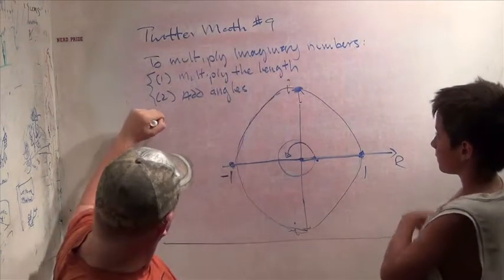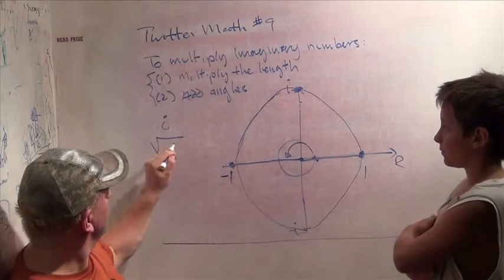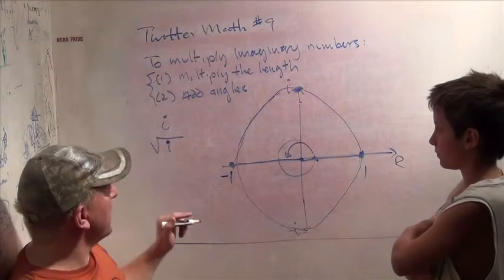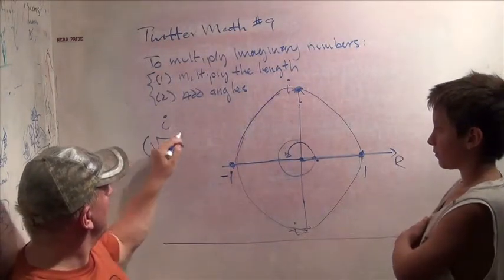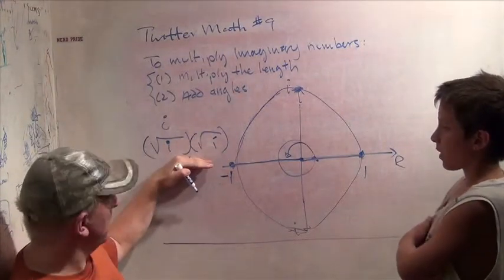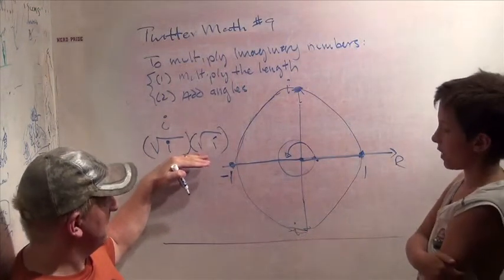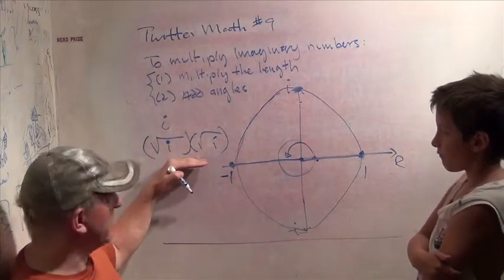Now, let's do one more fun little challenging problem. Let's look at this point up here, I, and let's try to find the square root of I. Now what is that going to mean? It's going to be a number that when you multiply it times itself, you get I. It's the square root of the square root of minus 1. That's right.